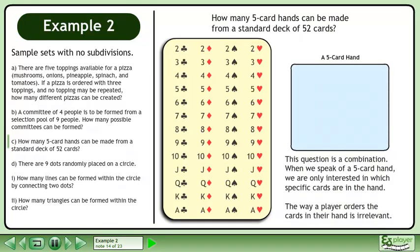This question is a combination. When we speak of a five card hand, we are only interested in which specific cards are in the hand. The way a player orders the cards in their hand is irrelevant.